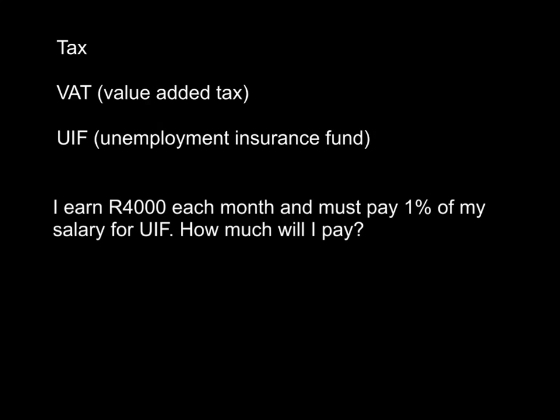Tax is the money that the government charges us so that they can have money to build our schools, run our hospitals, make roads, and all the things needed to keep the country going. There are many different kinds of tax and they are mostly worked out as percentages. Today we're just going to look at one, which is VAT - value added tax. VAT is basically the tax we pay on almost anything that we buy, and it is worked out at 14% of the cost of the item.